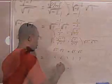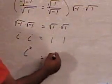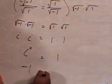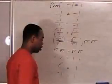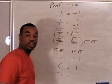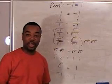i times i is i squared. 1 times 1 is 1. i squared is defined as negative 1. And we have finally here the conclusion that negative 1 equals negative 1.